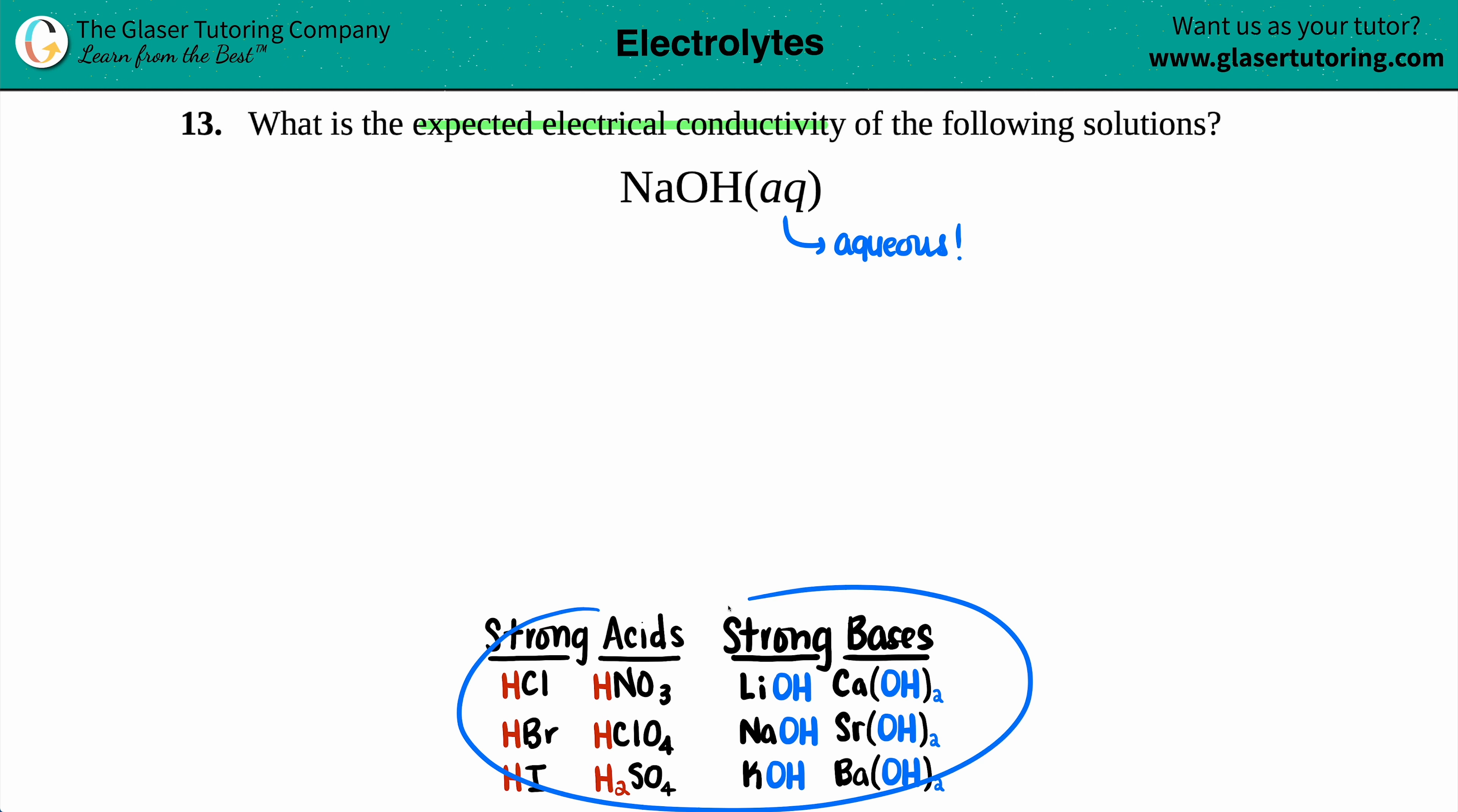And here's your list of six, right? You got six strong acids in this life. You got six strong bases and NaOH is on the cut, right? It makes the cut. Here it is. NaOH is a strong base.